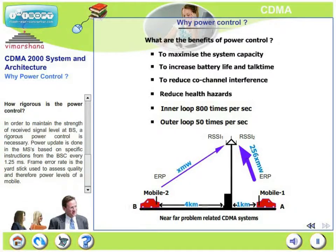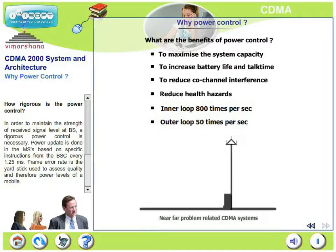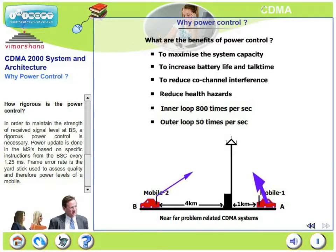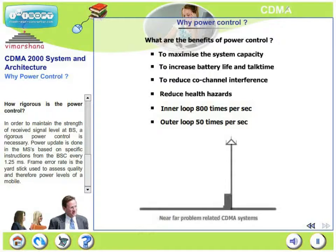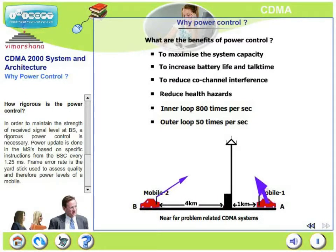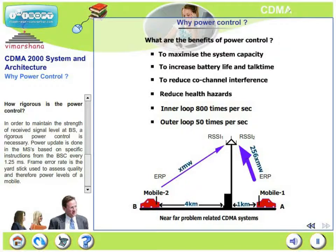How rigorous is power control in CDMA? It is quite rigorous. In order to maintain the strength of the received signal at the base station uniformly, rigorous power control is very much necessary. Power update is done in the mobile based on specific instructions from the BSE and BTAs every 1.25 milliseconds — that is 800 times every second. The base station constantly instructs the mobile to either increase or decrease its power by a fraction. Frame error rate is a yardstick used to assess overall quality and therefore the power levels of the mobile.